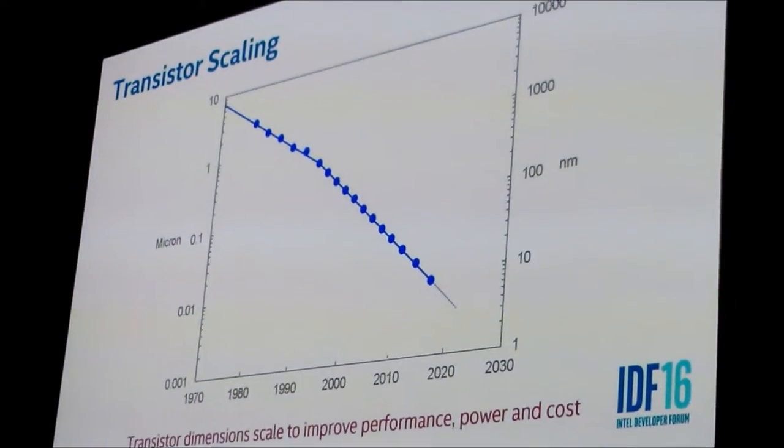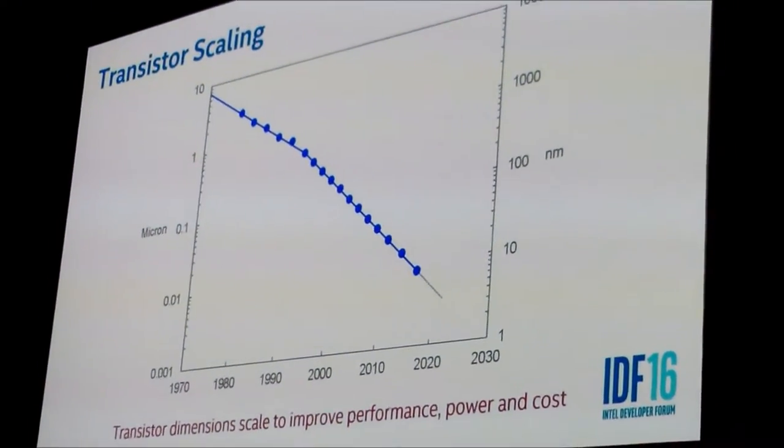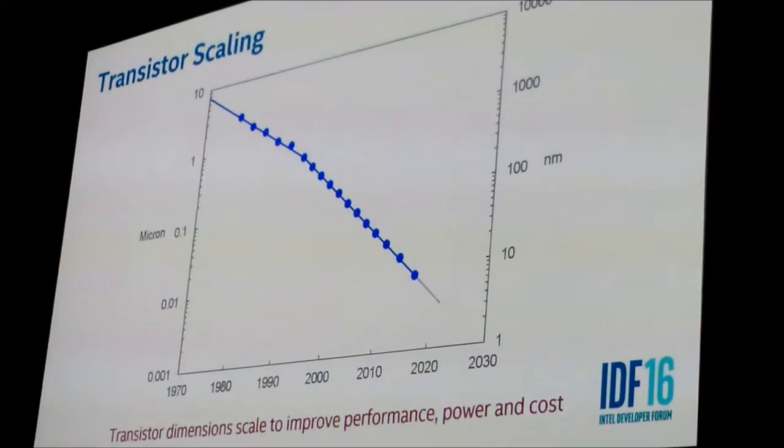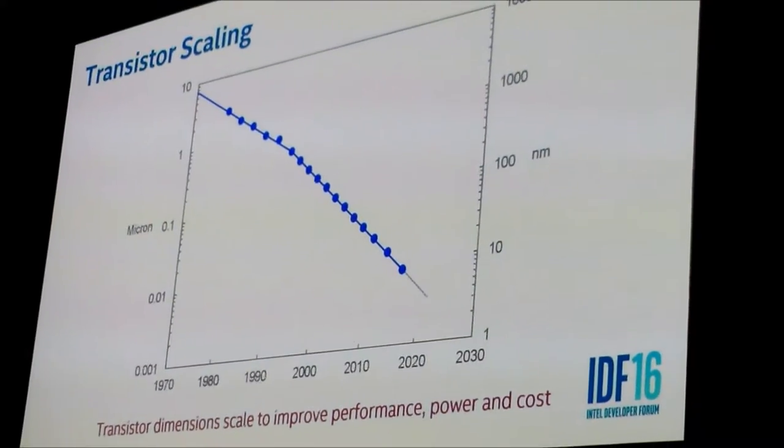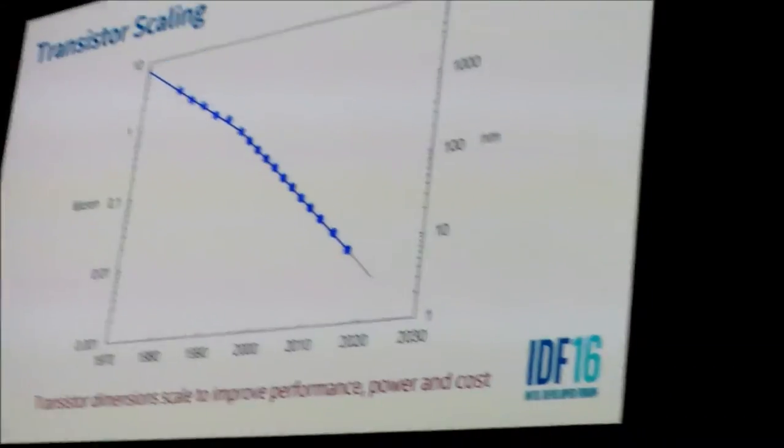Here's a graph I'm sure all of you have seen at one time or another — our transistor dimensions scale to improve performance, reduce power, and reduce cost. And now for the first time, I'll disclose some of our specific targets and specific plans for our coming 10 nanometer technology.